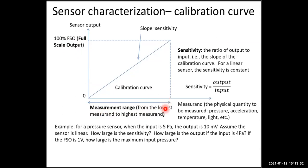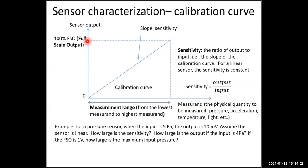From this calibration curve we can also see the definitions of measurement range and FSO (full-scale output). The measurement range is the range from the lowest to the highest measurement. FSO (full-scale output) is simply the output when the input is at its highest value.